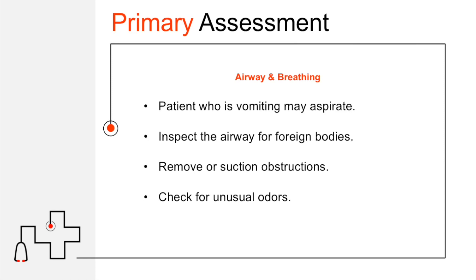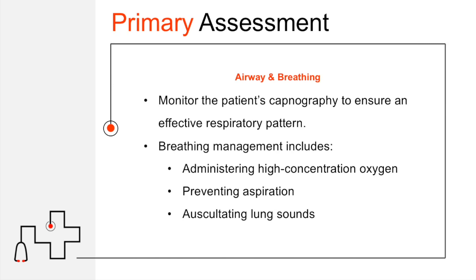The more you assess these patients and experience these different smells, the more they'll clue you in on what's going on. If a GI patient is having trouble breathing, it typically stems from a severe complication — they could be in decompensated septic shock. Airway and breathing compromise should give you a high index of suspicion for something serious. Monitor capnography to ensure an effective respiratory pattern. Breathing management includes high-concentration oxygen if needed, preventing aspiration, and auscultating lung sounds for any adventitious findings.